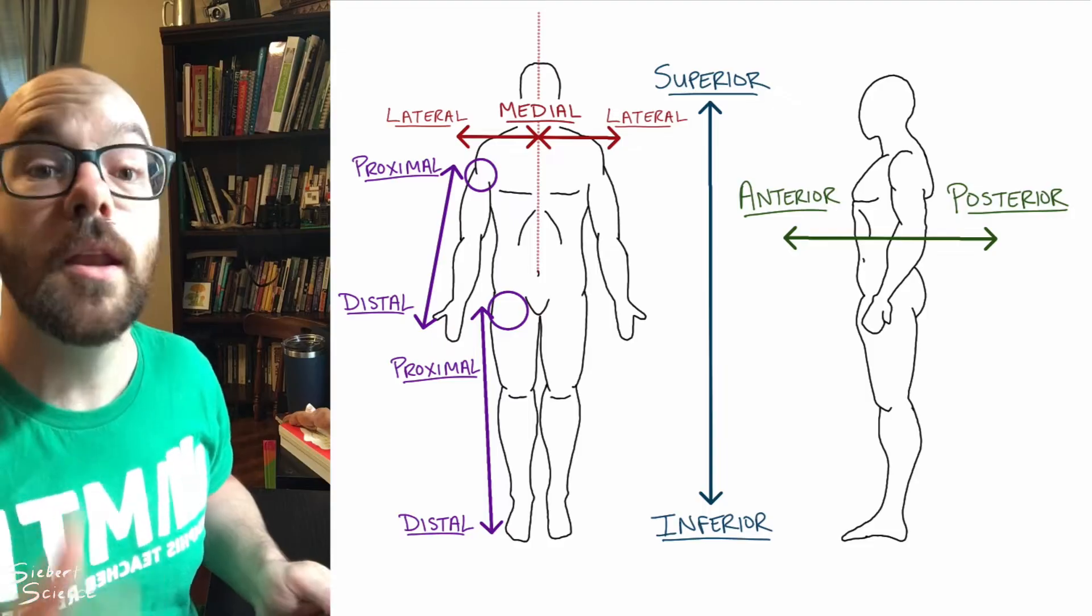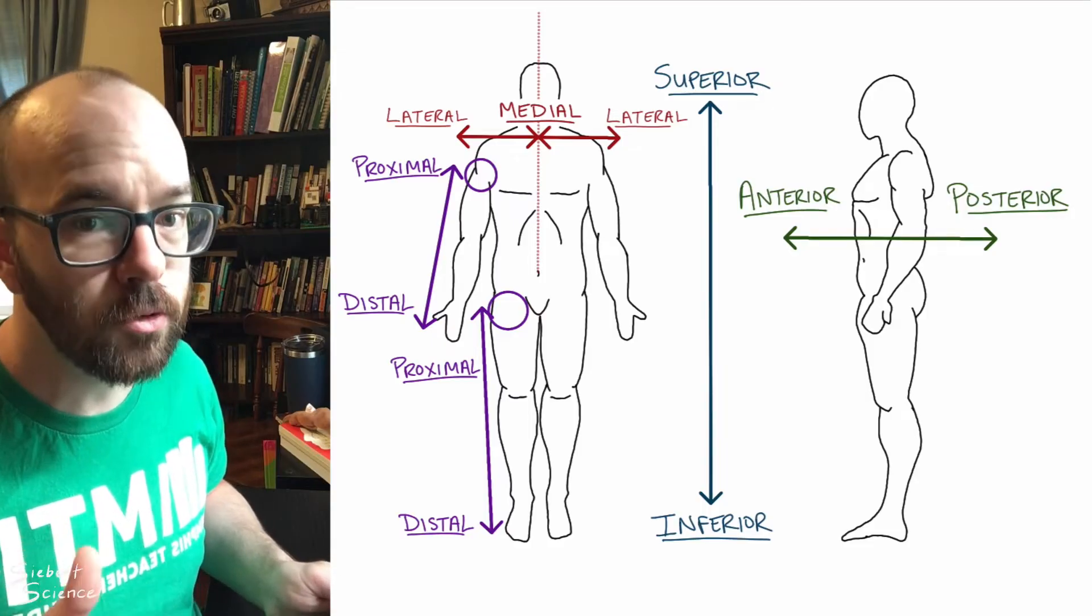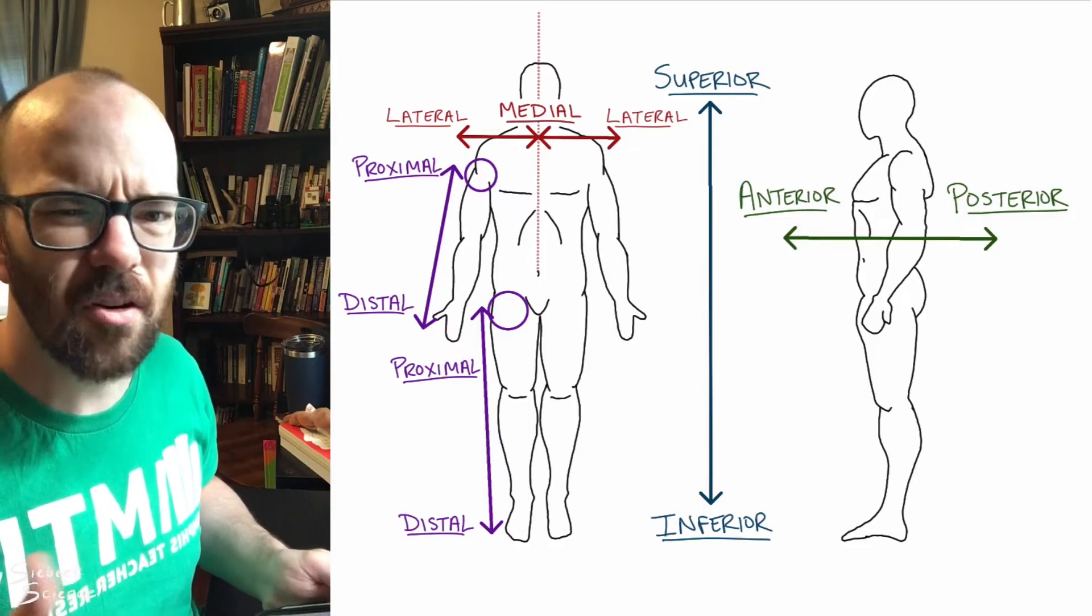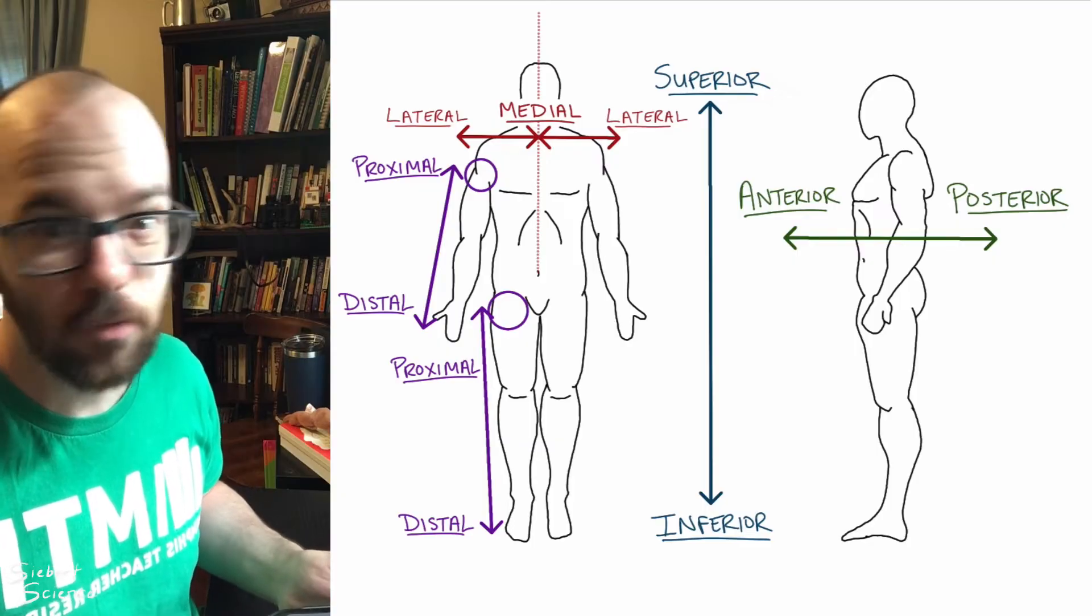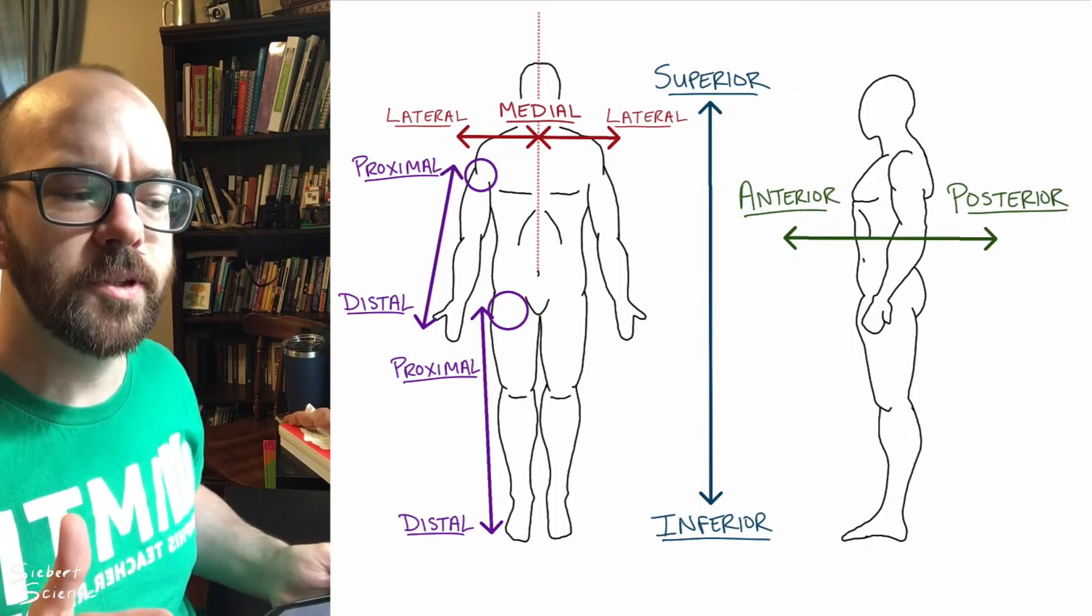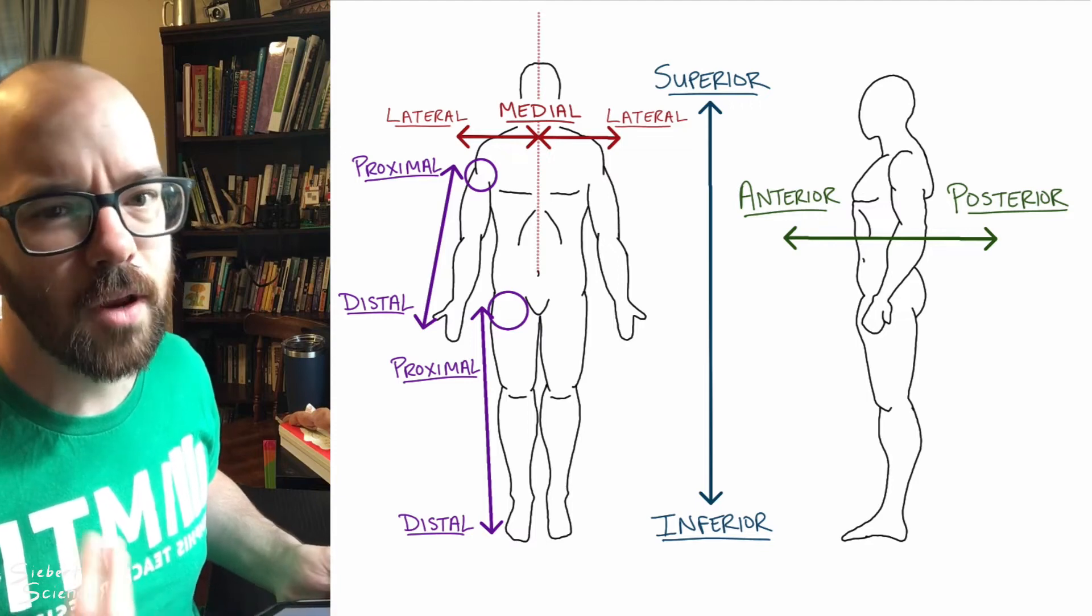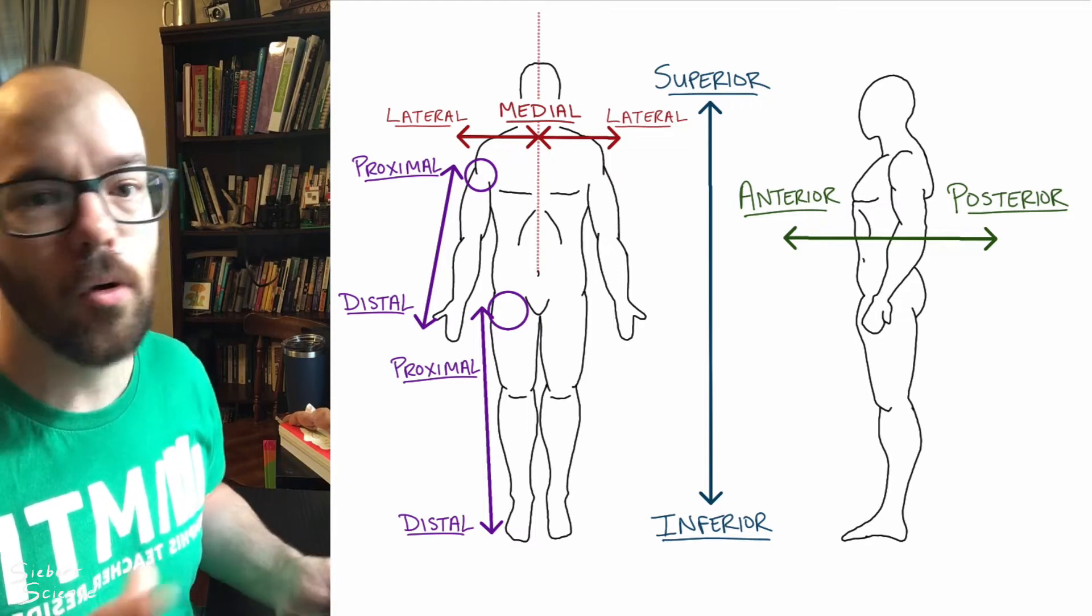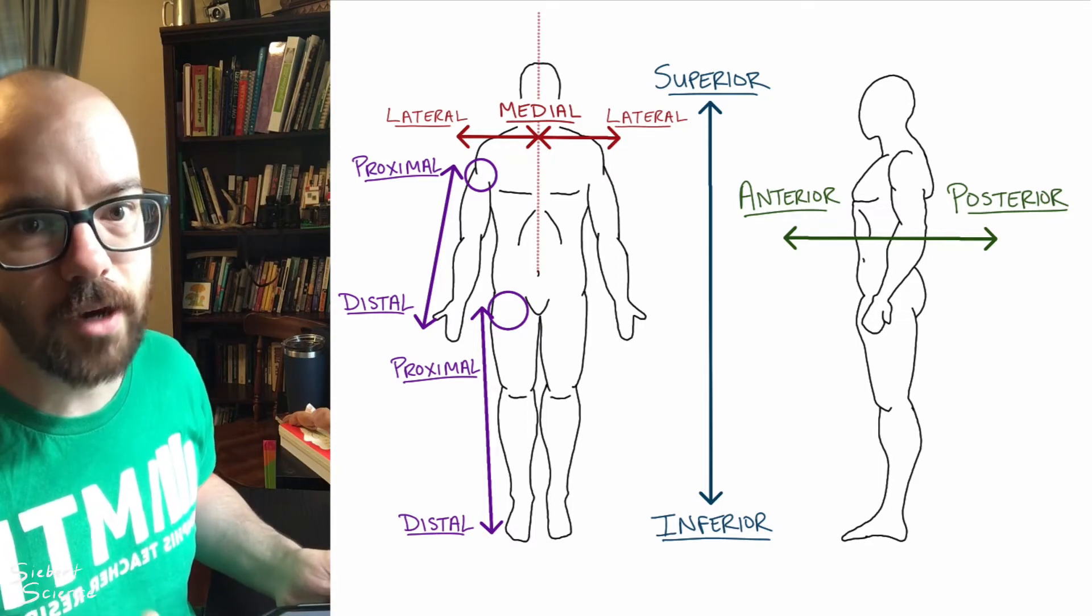Now proximal and distal are really only used for the arms or the legs or other certain tubes in the body, which we'll get into in later videos. So you wouldn't ever use proximal and distal for like the heart and the stomach because they're not part of the arms or the legs. We'll only use proximal and distal for the arms and legs right now.